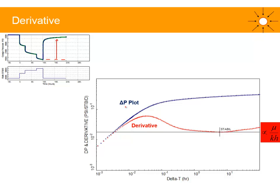You will end up with the delta P plot and derivative plot, both in log-log scale. This is called the log-log plot or the derivative plot. You plot these two versus delta T, which is the shut-in duration in the PBU.